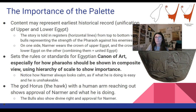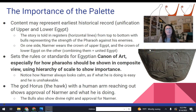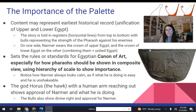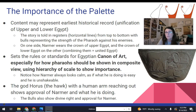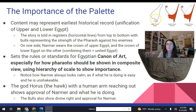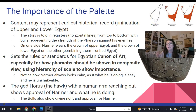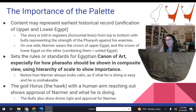So why is the Narmer palette so important? In terms of historical significance, they're pretty sure that this tells the story of the unifying of upper and lower Egypt. It's got the battle scenes, and it also shows Narmer — on one side he's wearing the crown of upper Egypt, which kind of looks like a bowling pin, and then on the other side he's wearing the lower crown. Whenever in Egyptian art you see those two crowns combined, that is the ruler of upper and lower Egypt together.